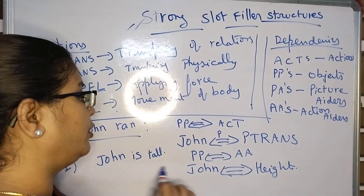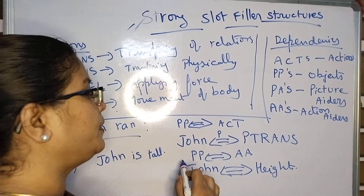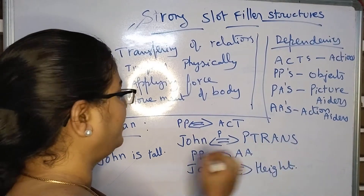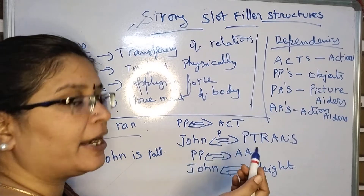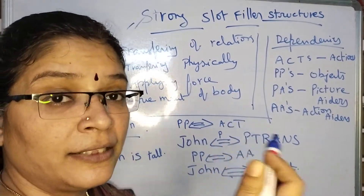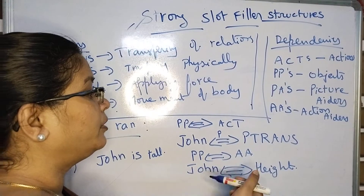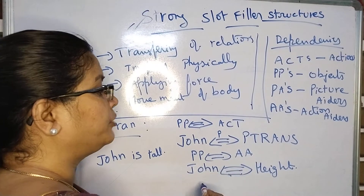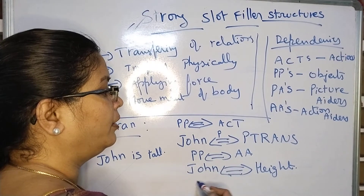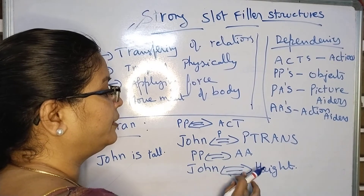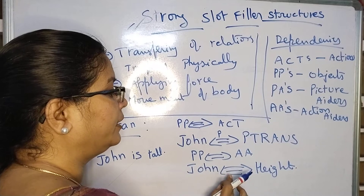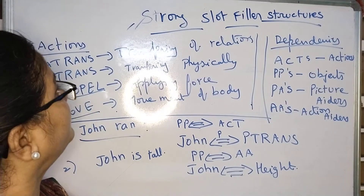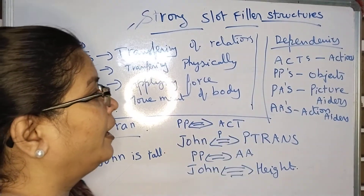Coming to the second example, 'John is tall.' Here also John is P-P, and we are representing the adjective of John — that he is tall. For that, you represent A, which stands for action aider. So P-P to action aider: you are representing John's height. Adjective or quality can be represented by action aider.